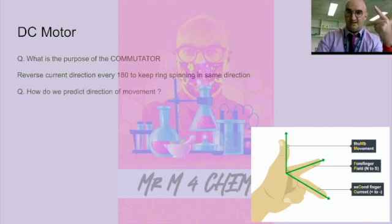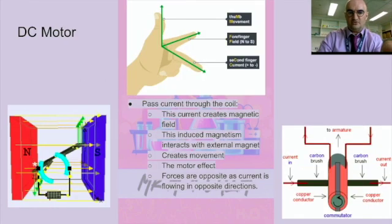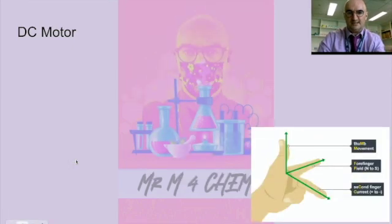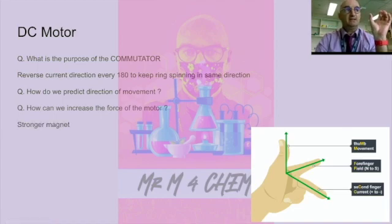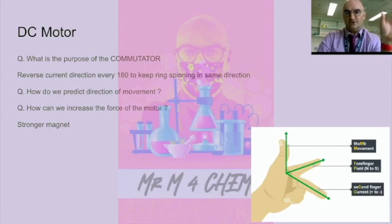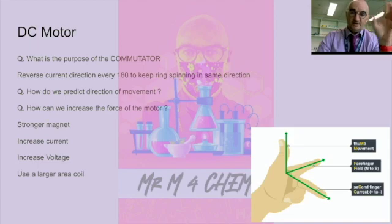How do we predict the direction of movement? Fleming's left-hand rule. Isn't the question often asked, how do we increase the force of the motor or the strength of the motor, the power of the motor? What can we actually do to increase the turning force created by that DC motor? Well, you could use a stronger magnet. The stronger the magnet, the more magnetic flux or field lines are generated, the more frequently those are cut, so the stronger the turning force. You could increase the current and, of course, the voltage as well. And you could also use a larger area of coil. That's normally a two mark question, so any two of those would get you the mark.